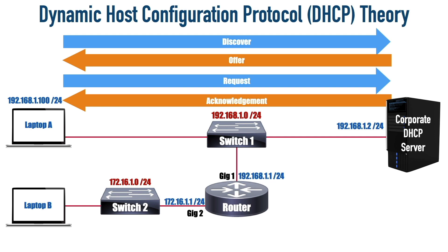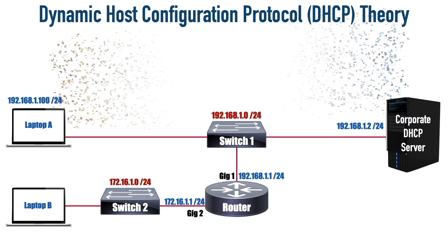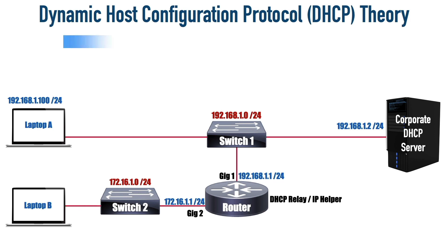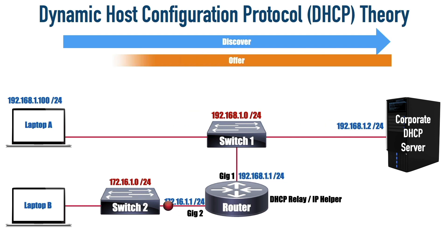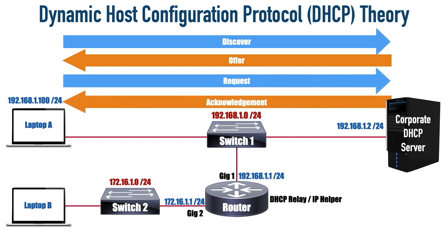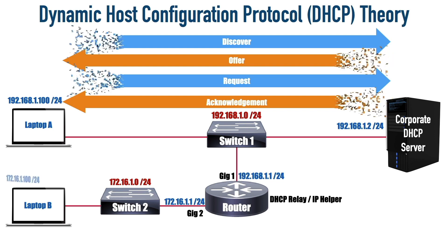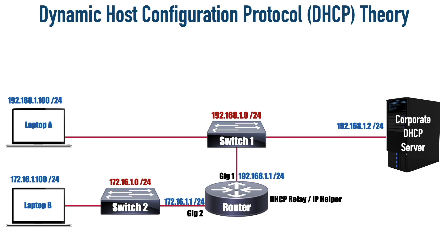Now let's consider laptop B. It does not have a DHCP server on its subnet, so when it sends out its discover broadcast, that broadcast will be dropped by the router. How do we fix that? We can configure that router as a DHCP relay agent — sometimes called an IP helper configuration. With that configuration in place, the router forwards specific broadcast frames including DHCP to a configured destination, such as 192.168.1.2. The discover broadcast gets converted into a unicast to the server, and laptop B ends up being assigned an IP address of 172.16.1.100.